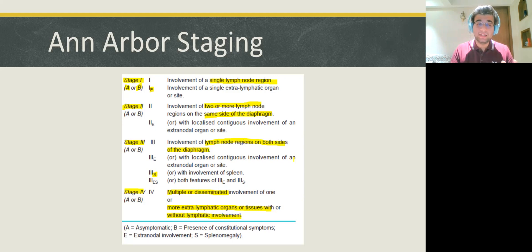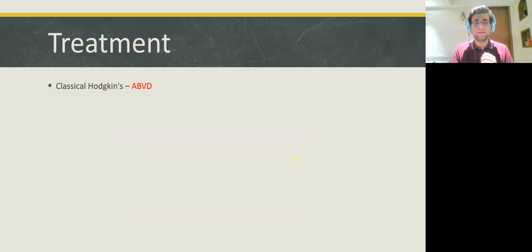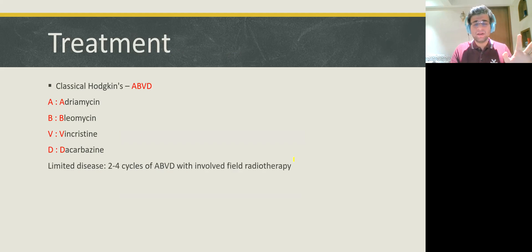So, now let's take a look at the treatment. The treatment depends whether it's a classical type or non-classical type. A classical Hodgkin's lymphoma, we follow the ABVD regimen. What is ABVD regimen? A stands for adriamycin, B stands for bleomycin, V for vincristine and D for dacarbazine. These are the four drugs that are used for the treatment of classical Hodgkin's lymphoma. And if it's a limited disease, we give two to four cycles of ABVD with involved field radiotherapy. Then advanced disease, we give six cycles of ABVD. And this is monitored with PET CT scan.